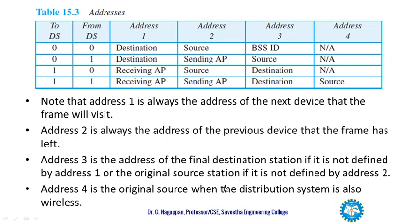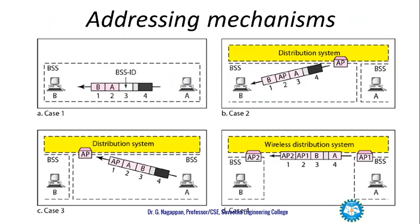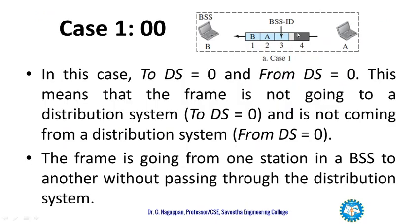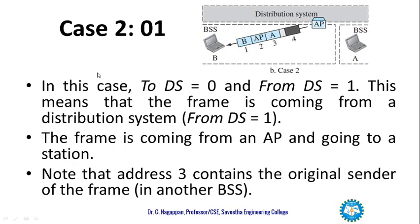In case 0-0, the distribution system is not present at all, so address 4 is empty and we use only the first three address fields. In case 2, ToDS is 0 but FromDS is 1, meaning the frame comes from the distribution system — that is, from an access point — and goes to the BSS.